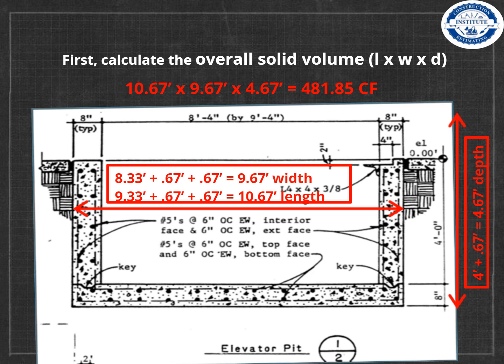First, calculate the overall solid volume (length × width × depth), as if we were pouring one big solid chunk of concrete. Across the top of the diagram, we see the wall dimension of eight inches, and it also gives us the interior dimensions for the width and length.